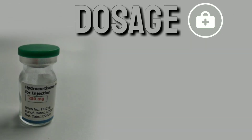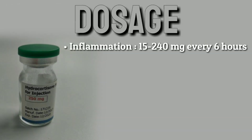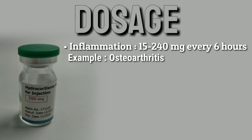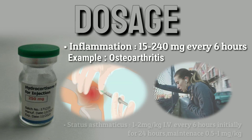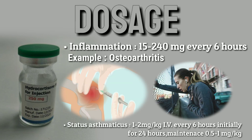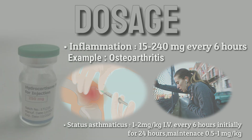Dosage: 15 to 240 mg IM or IV every 12 hours in cases of inflammation. In status asthmaticus: 1 to 2 mg per kg IV every 6 hours initially for 24 hours, followed by a maintenance dose of 0.5 to 1 mg per kg every 6 hours.